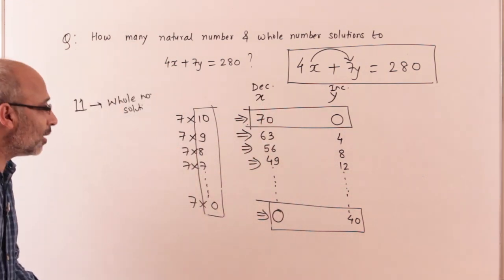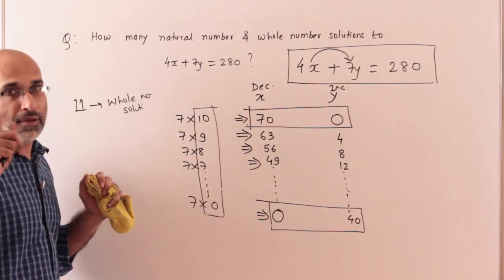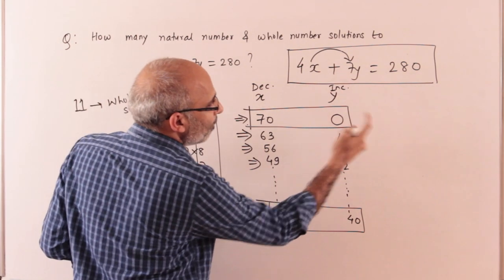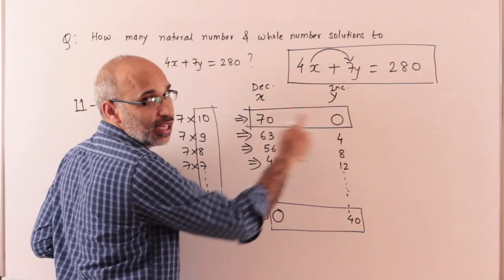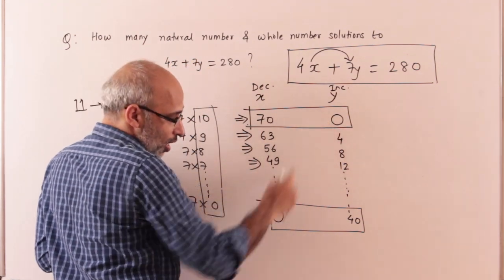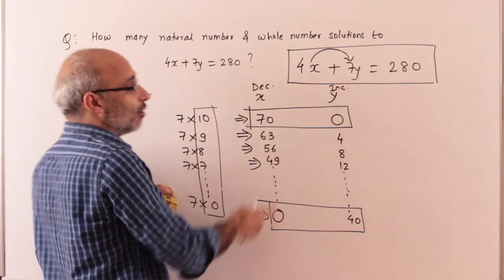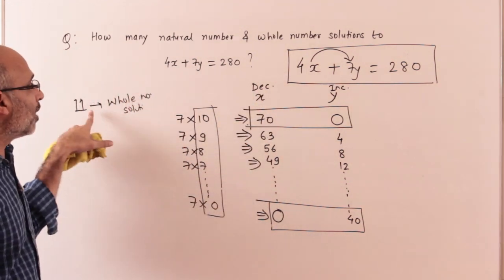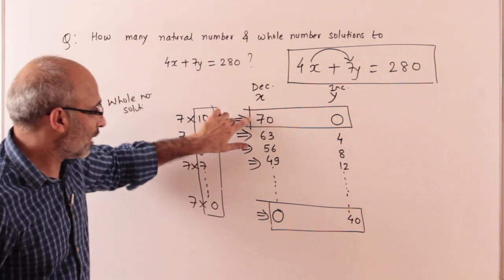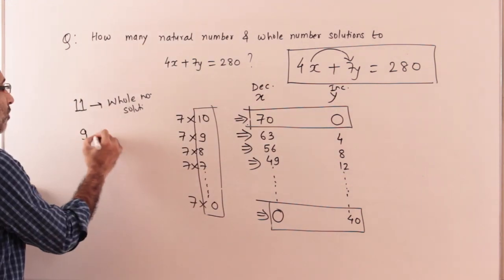How much is natural number? In natural numbers, there should not be 0. This means the first solution will not be natural number, and the last one will not be natural number. This means the whole number will be 11, and the natural number is 9.